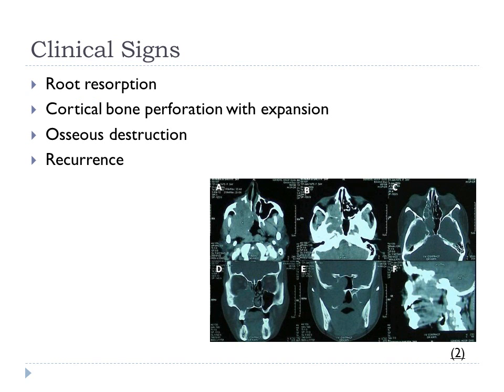The clinical signs include root resorption, cortical bone perforation with expansion, cortical destruction, and recurrence. These signs can be present in individuals who are symptomatic and have an aggressive form of Central Giant Cell Granuloma. When palpating regions of this disease, it can also be tender.